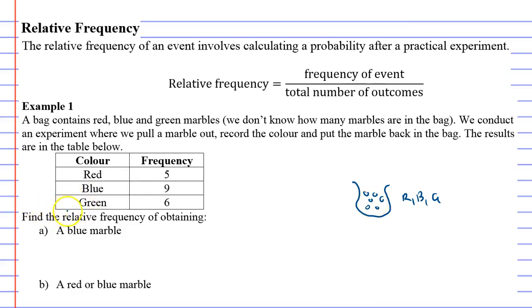Now when it says find the relative frequency of obtaining a blue marble, all you need to do is go frequency of event. So that just means I had nine blue marbles and at the bottom is your total. Now when I add these up I actually get twenty. Nine plus six plus five is twenty. The relative frequency of getting a blue marble is just nine over twenty. And you probably notice it's exactly the same as the probabilities we've done before.